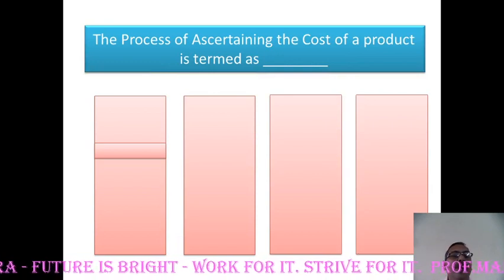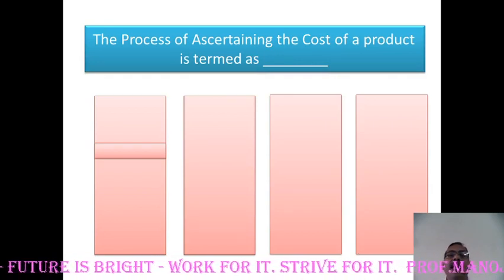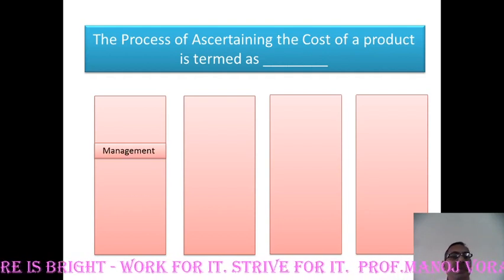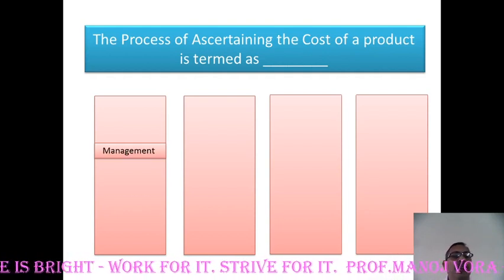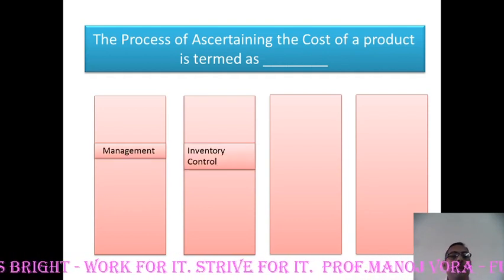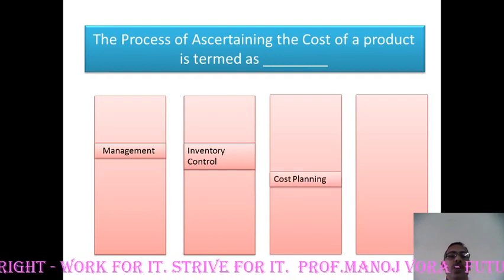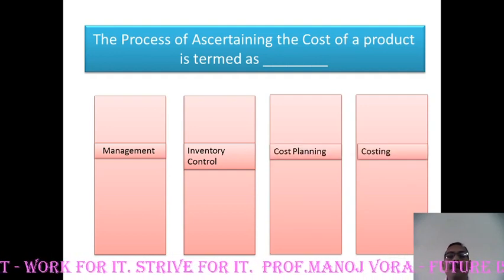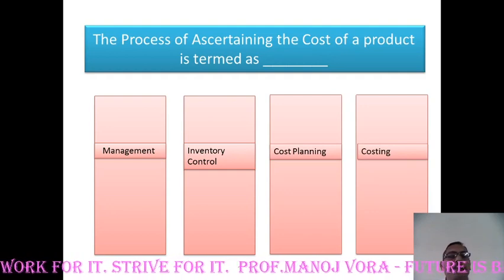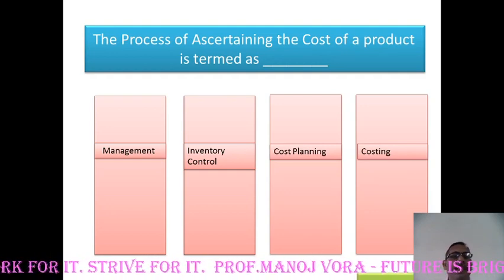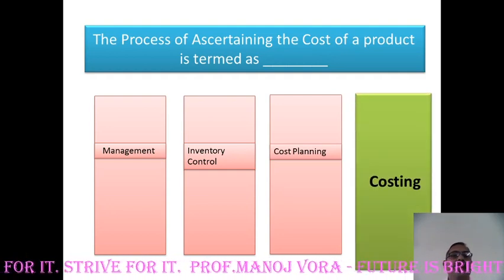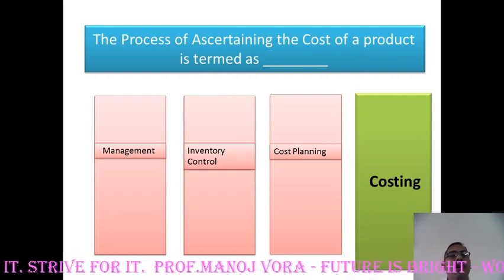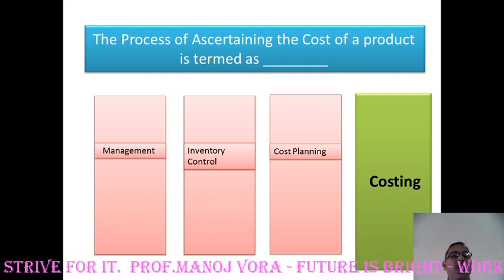Here is your next question: the process of ascertaining the cost of a product is termed as dash — your first option management, next inventory control, next option cost planning, and the last option costing. Your right answer is costing. The process of ascertaining the cost of any product or a service can be termed as costing.